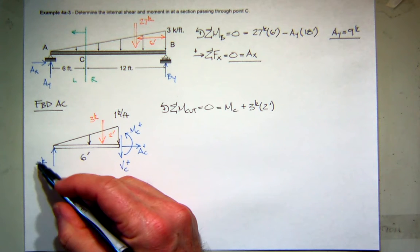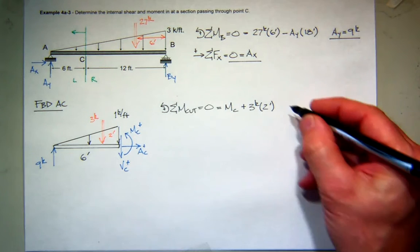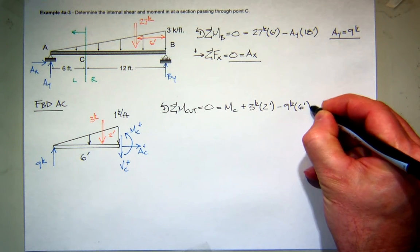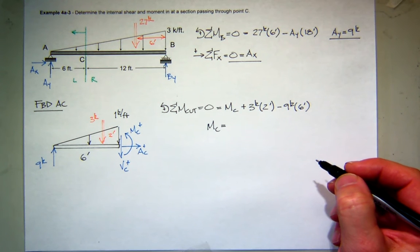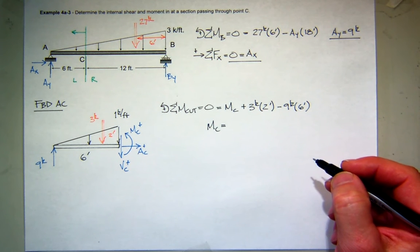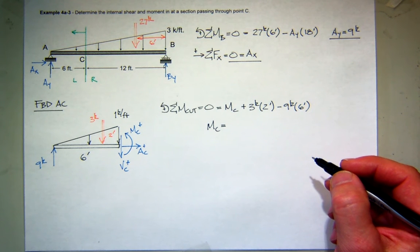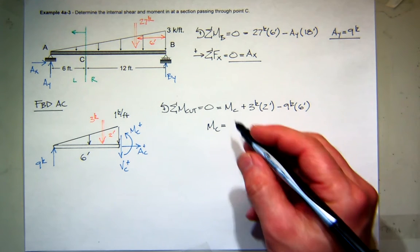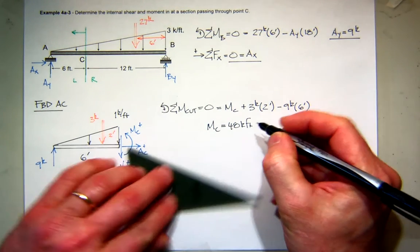And you get all the way out here on the end, the reaction, the 9 kip force is up, and that's going to create negative bending moments. So 9 kips times 6 feet. So it looks like the moment at C is going to be positive, and it's going to be 48 kip feet.